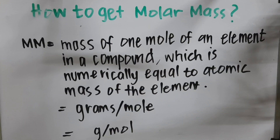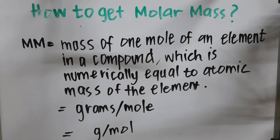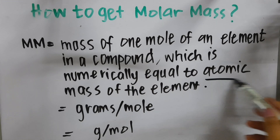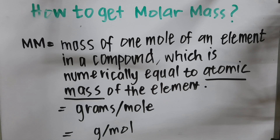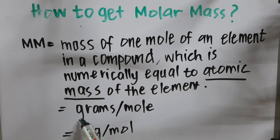How do we get the molar mass? Molar mass is the mass of an element in a compound which is numerically equal to the atomic mass of the element. Remember, we can find the atomic mass of an element in our periodic table. In computing the molar mass, the answer will be expressed in grams per mole, or g/mol.